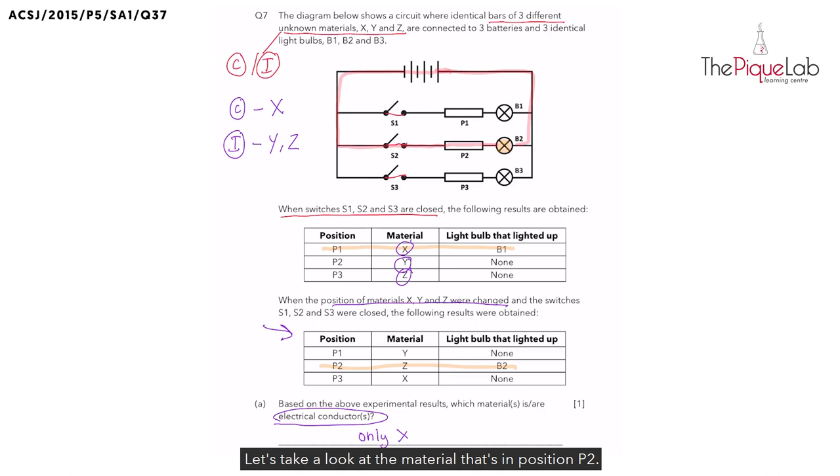Let's take a look at the material that's in position B2. We have material Z. But didn't we conclude that material Z was an electrical insulator just now? This is weird. So if bulb B2 lit up, did material Z allow electricity to flow through it? Yes, that means material Z cannot be an electrical insulator. It must be a conductor of electricity.